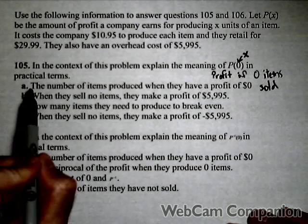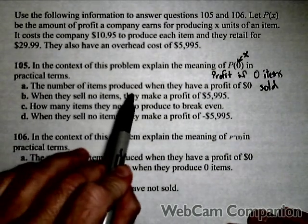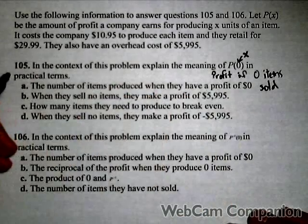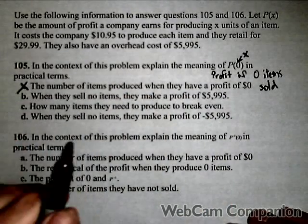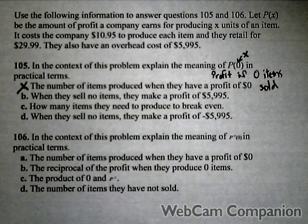We've identified the 0 as the number of items. Let's take a look at our answers. The number of items produced when they have a profit of $0. That's not it because the 0 is not a dollar amount, it's number of units.